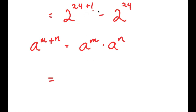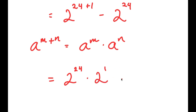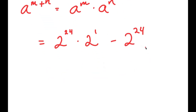So 2 to the power of 24 plus 1 turns into 2 to the power of 24 times 2 to the power of 1, and I still have this minus 2 to the power of 24. From here, what I'm going to do is factor out 2 to the power of 24.